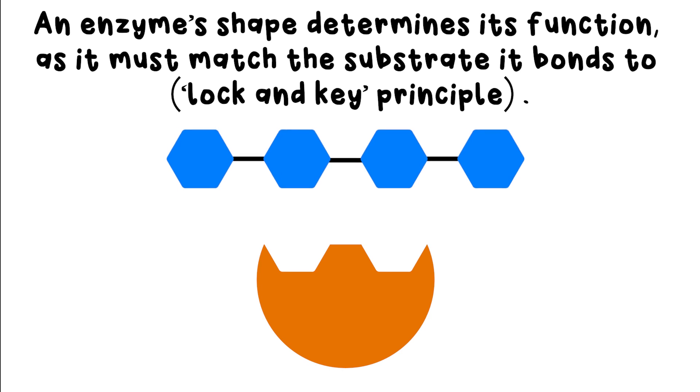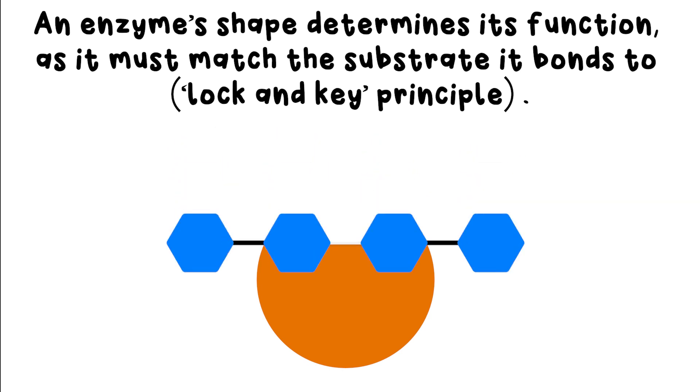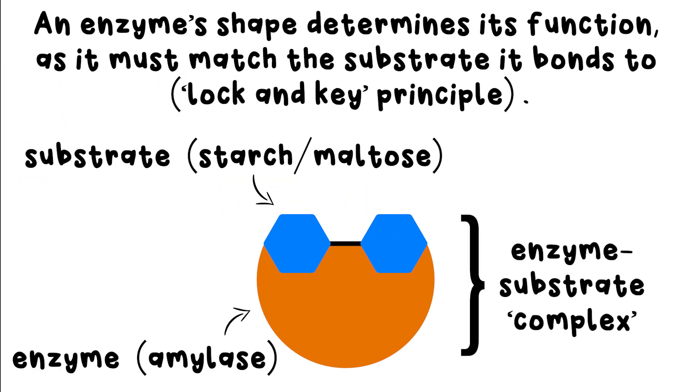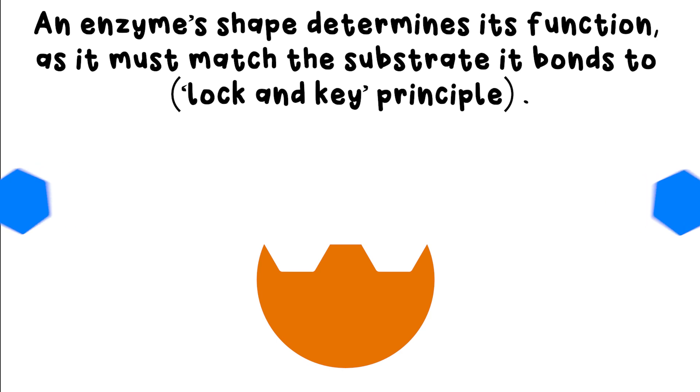If they do, the substrate bonds to the enzyme and the enzyme breaks the bonds within the substrate, and the products of the reaction go on their way. In our example, the glucose is now ready to be absorbed into the bloodstream in your small intestine.